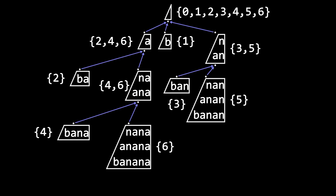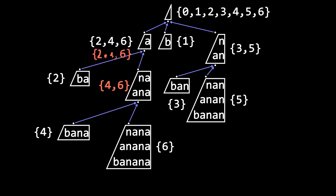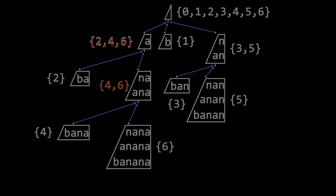The definition of link means that when the EC A's string occurs, A's father's string occurs too. So all of A's father's strings are the suffixes of all of A's strings.